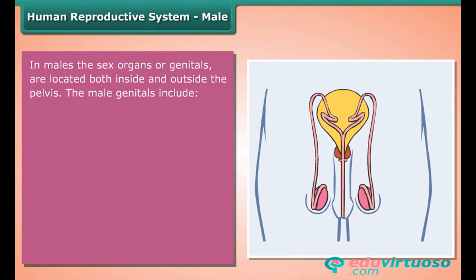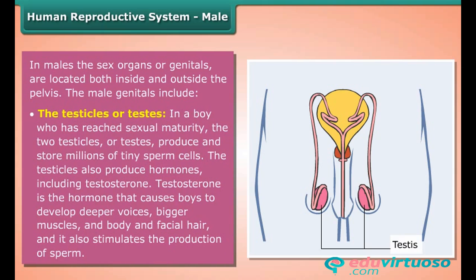In males, the sex organs or genitals are located both inside and outside the pelvis. The male genitals include the testicles or testes. In a boy who has reached sexual maturity, the two testicles produce and store millions of tiny sperm cells. The testicles also produce hormones including testosterone, which causes boys to develop deeper voices, bigger muscles, and body and facial hair.